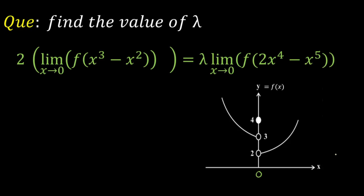Hello everyone. Today we're going to look at a cool problem from limits. The question is: find the value of lambda for which the given equation is satisfied. The equation is 2 multiplied by limit x→0 of f(x³ − x²) equals lambda times limit x→0 of f(2x⁴ − x⁵). Instead of giving the function directly, they have given the graph of f(x), and using this graph and equation, we have to calculate the value of lambda.